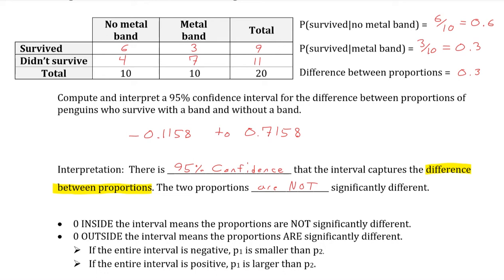If 0 is inside of the interval, that means the lower bound and the upper bound capture the value of 0. That means proportions are not significantly different. That is the case in this example. We have a negative 0.1158 to 0.7158. That means 0 itself is between that. If you see a negative up to a positive for a confidence interval, that means 0 has to be contained in there.